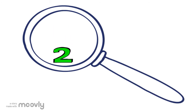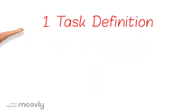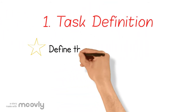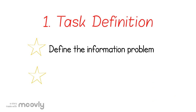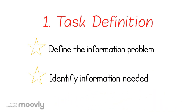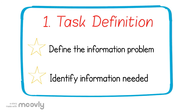Each step has 2 sub-steps. Step 1: Task Definition. Define the information problem and identify the information needed. Ask yourself the following questions: What does my teacher expect me to do? What are the requirements of the assignment? Do I understand what I need to do? What are the questions I need to answer? What do I need to know about the topic? Make sure to have it all figured out before you get started. You can put the assignment into your own words and ask the teacher if you are correct.